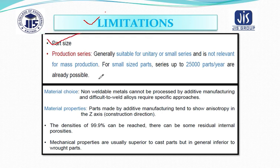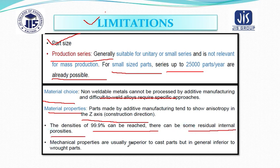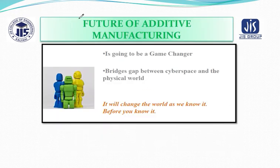Regarding limitations: first, part size — you cannot generate very large products; productivity in series — for small-size parts, up to 25,000 parts per year are possible; for materials, non-weldable metals cannot be processed; regarding material properties, additive manufacturing tends to show anisotropy in the Z-axis; density of 99.9% can be reached, but there can be some residual internal porosity; and mechanical properties are usually superior to cast parts but generally inferior to wrought parts.